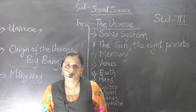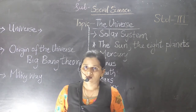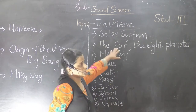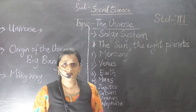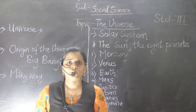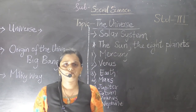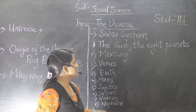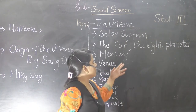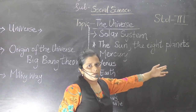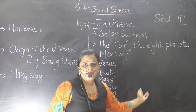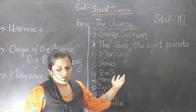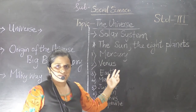After that we discuss the solar system. So what is the solar system? The solar system includes the sun and the eight planets, one satellite, and comets, asteroids, etc.